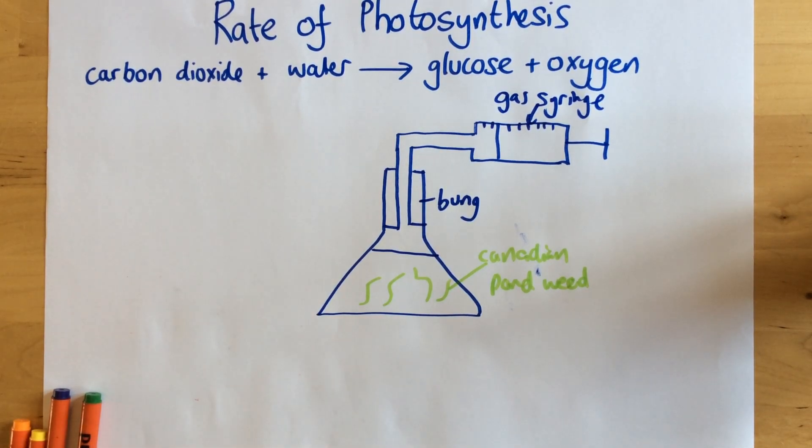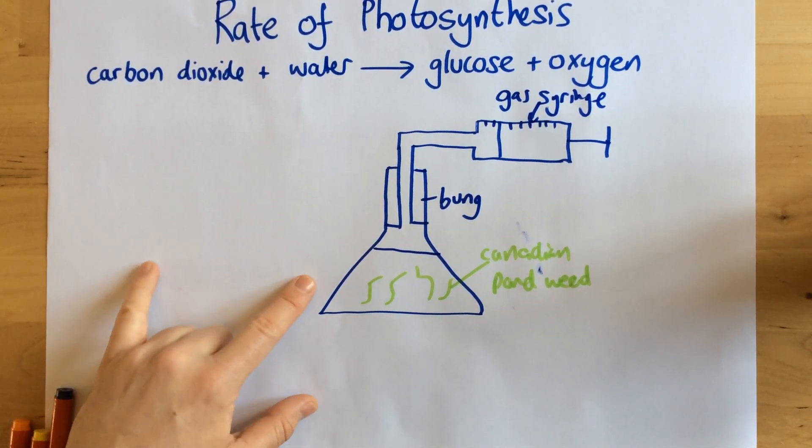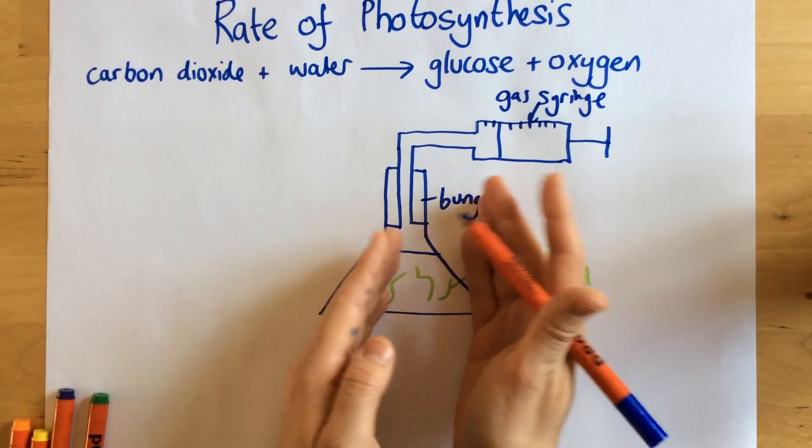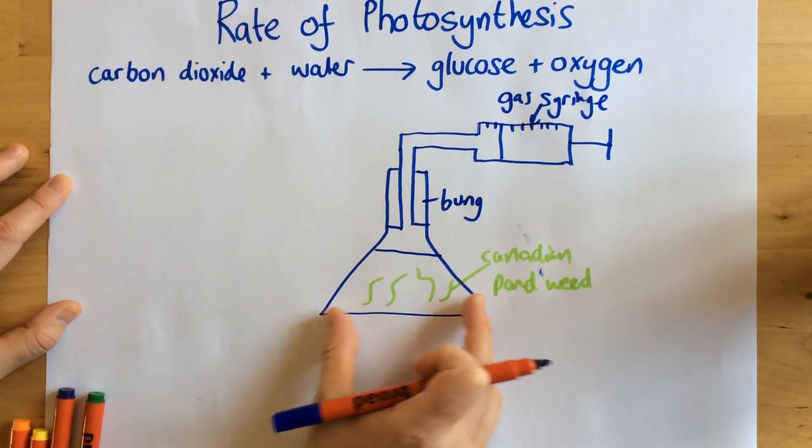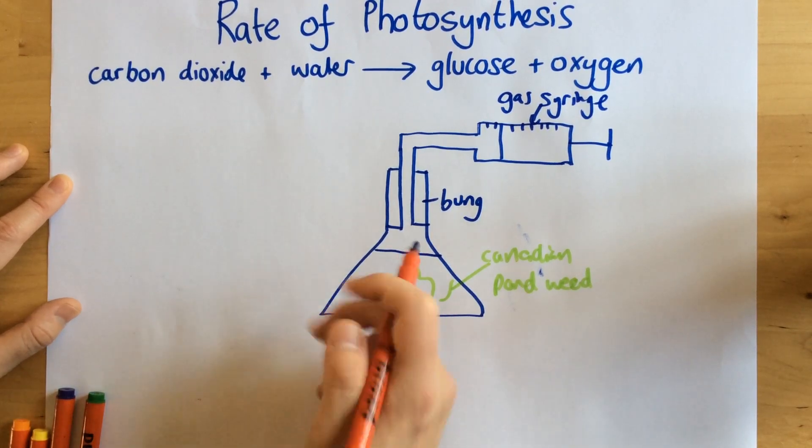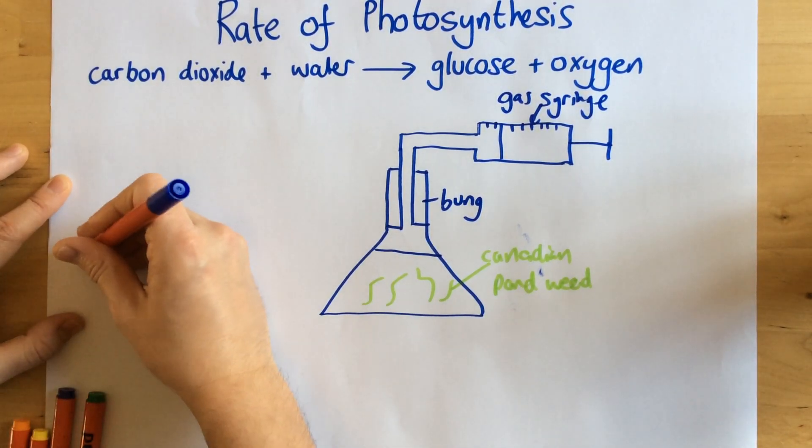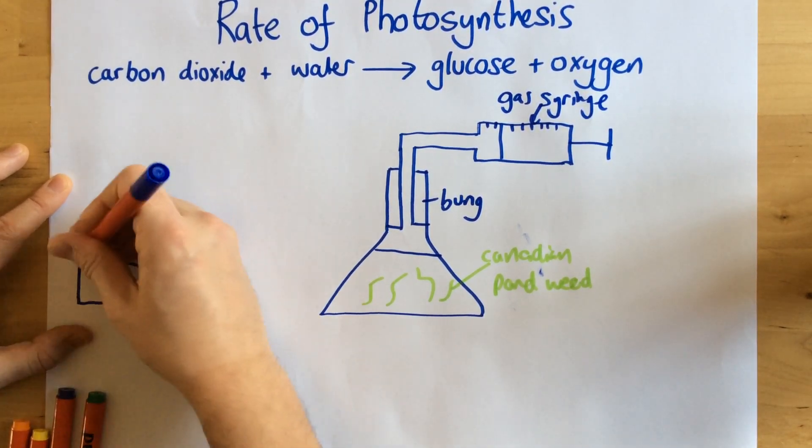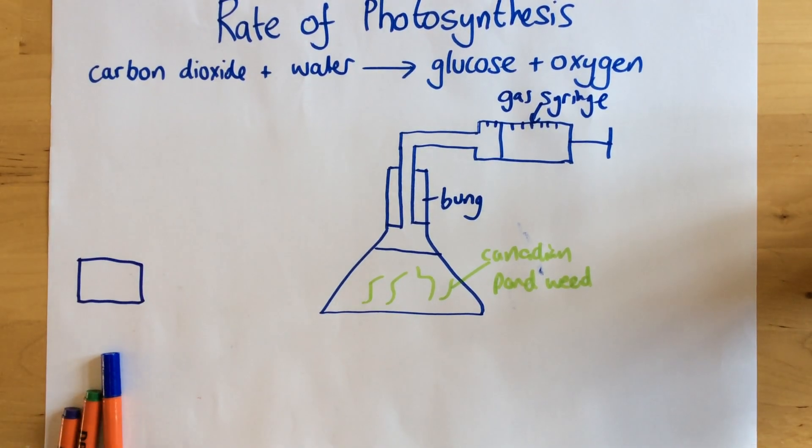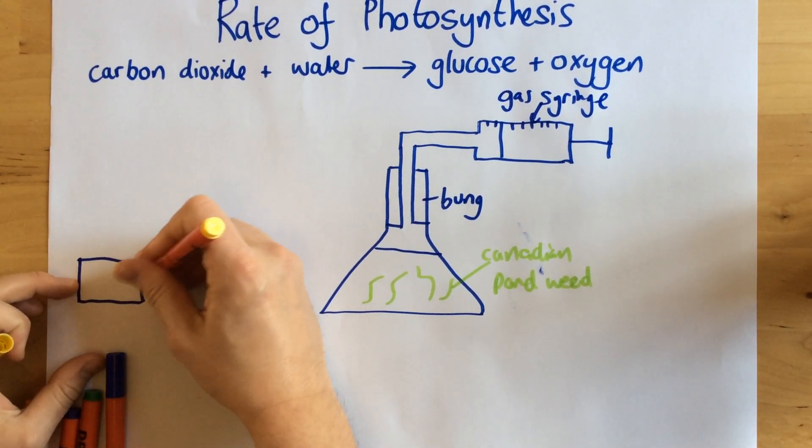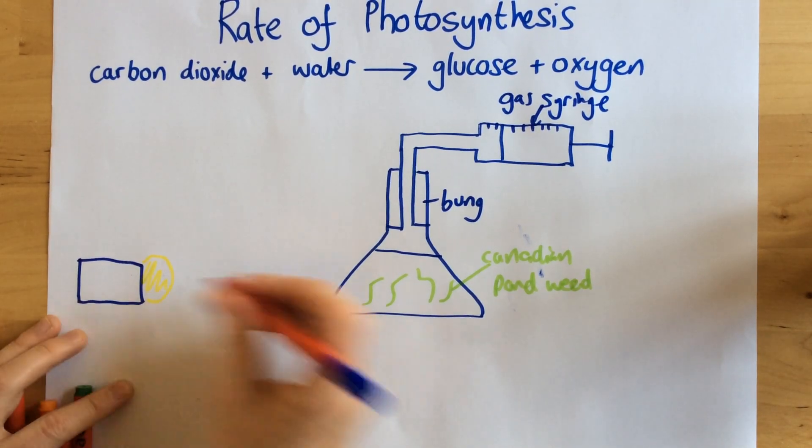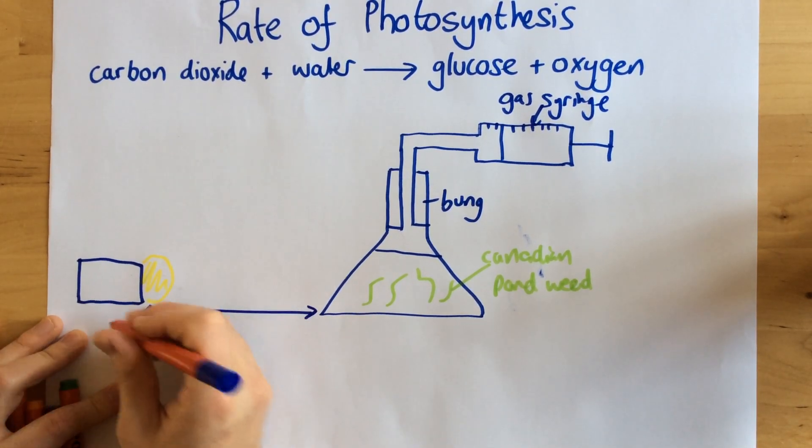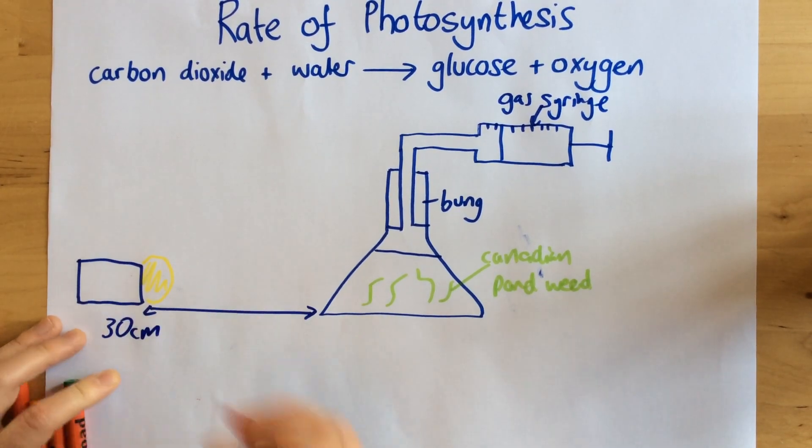So our independent variable, the thing that we're changing on purpose to see the effect of, is the distance of white light from the plants. So first of all, let's say we've got a light here, my lamp giving out white light. And let's say that is 30 centimeters away from the pondweed.